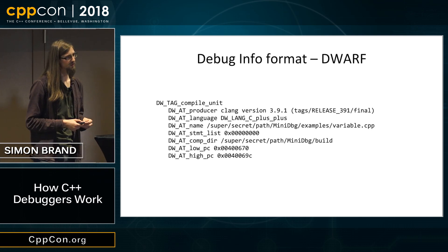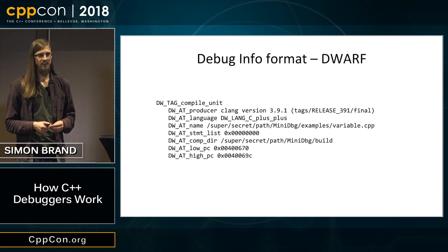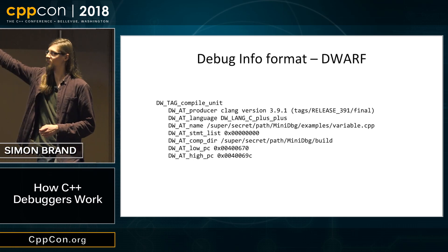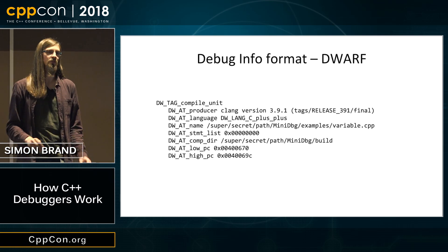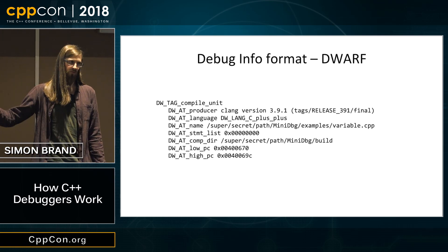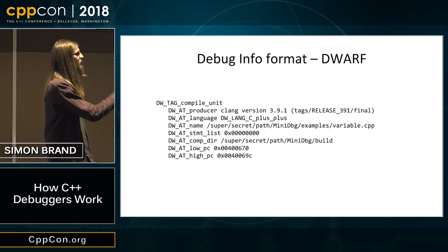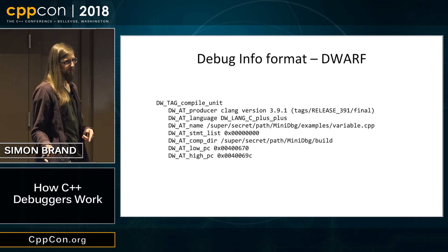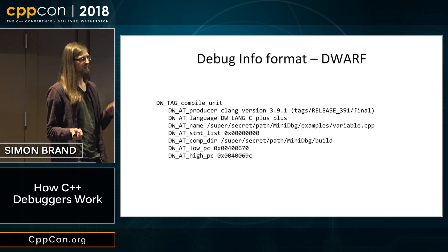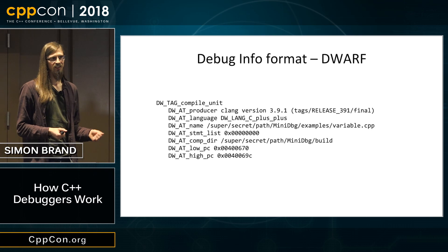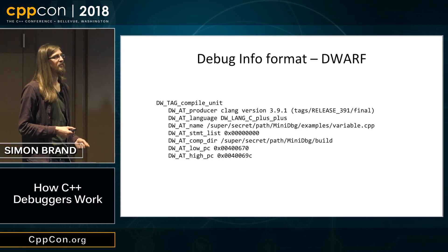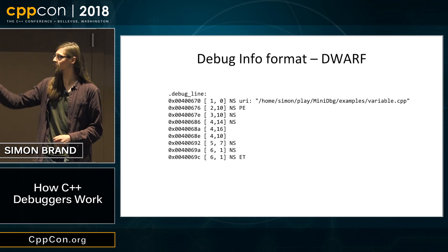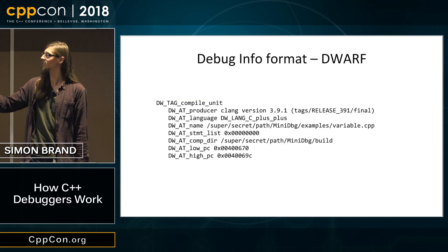Here's an example of a compilation unit DIE. It tells you things like: I was compiled by Clang 3.9.1, this is the file I was compiled for, and I'm C++. You can get quite a lot of information about your programs just by looking at these. This is what the debugger will be consuming when it's trying to understand everything about your program. Debuggers can do a lot without DWARF just by looking at the ELF file, symbol tables and things like that, but for heavyweight debugging you need the DWARF information.